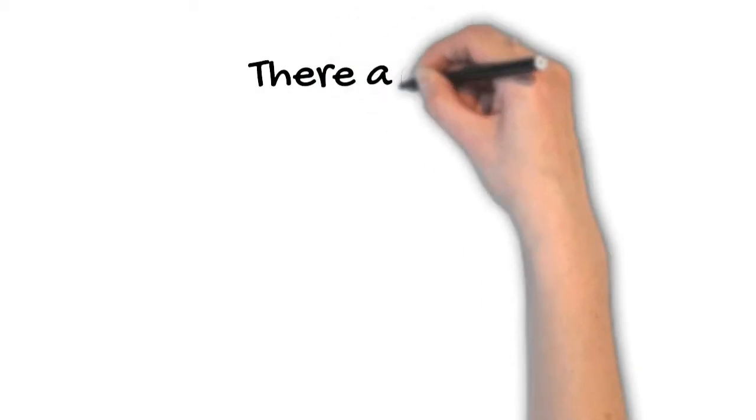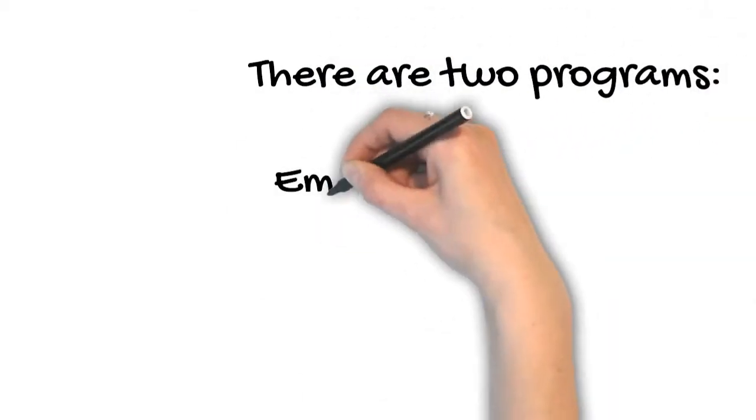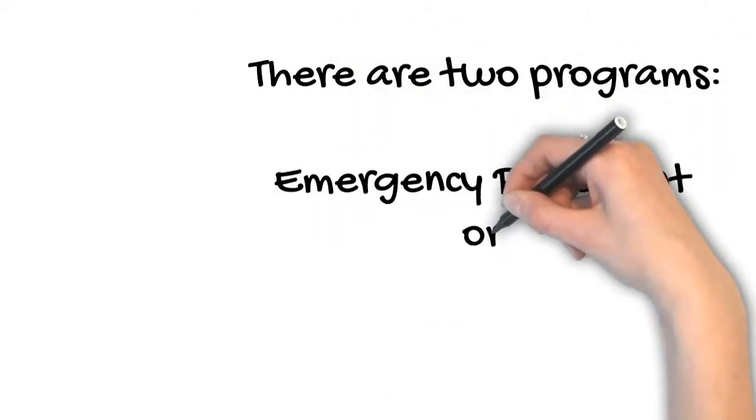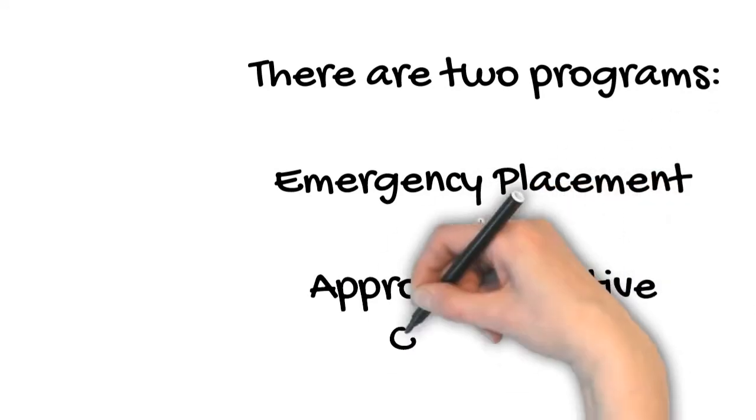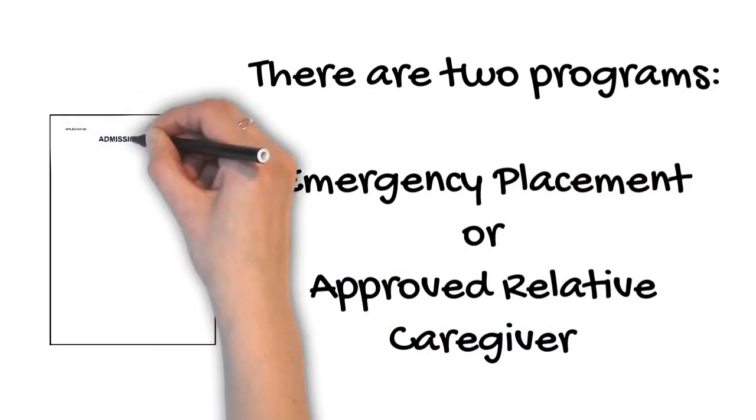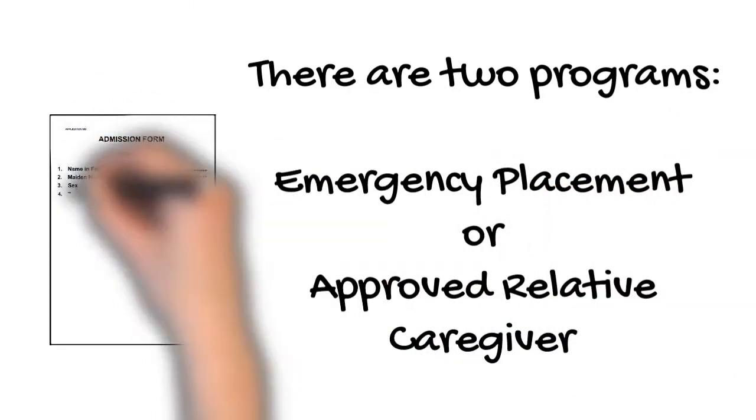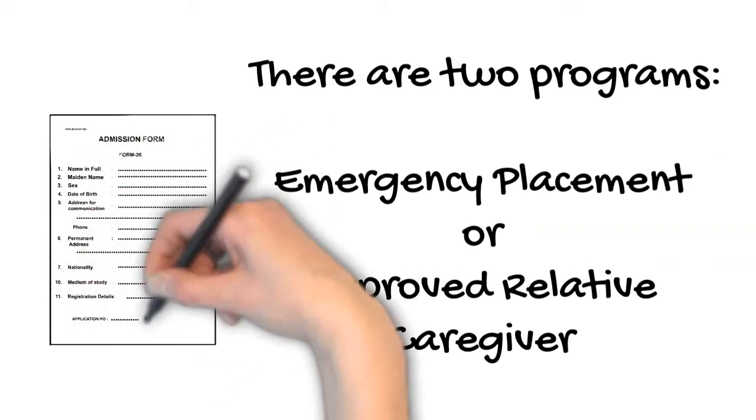There are two different programs: one, emergency placement; two, approved relative caregiver. The application you submitted to become a foster parent is especially important for phase two, which involves being an approved relative caregiver.